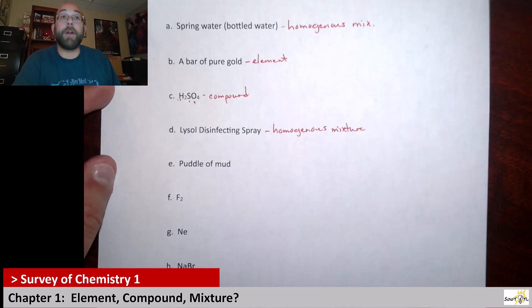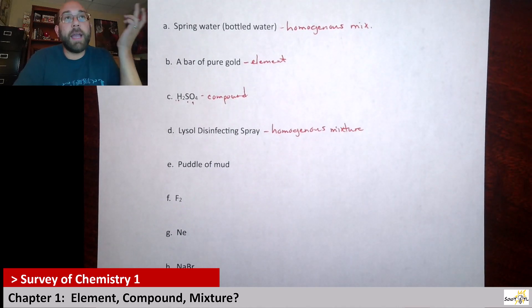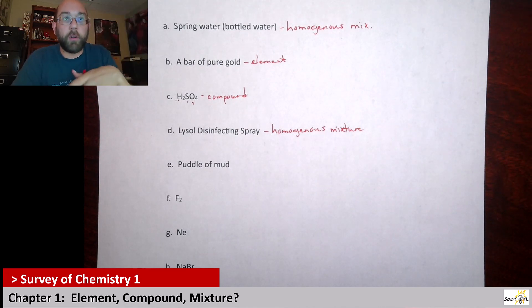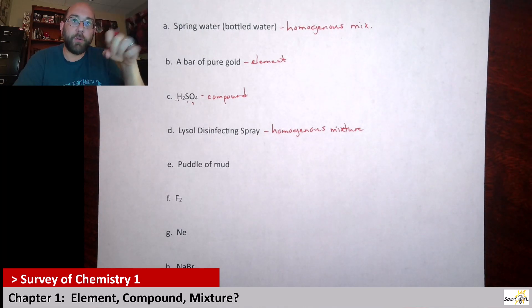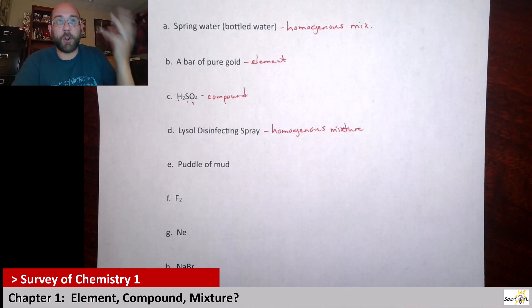Next up we have a puddle of mud. Looking at this puddle of mud, we know there's water in there because it's a puddle, but it's mud, so it's got dirt. So it's definitely some type of mixture. It's not just one compound, it's multiple things in there. But think about what happens with a puddle of mud. If you jump in that puddle, the dirt gets kicked up and stirred up.